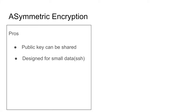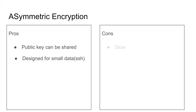The con of asymmetric encryption is that it is very slow because of all the power and modulo arithmetic on large prime numbers — 2048-bit numbers. It is extremely slow, but tolerable for small data like SSH commands. It does not work well for encrypting large payloads like a one-megabyte JSON file.